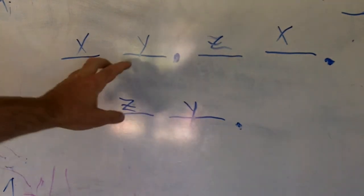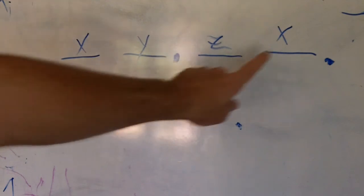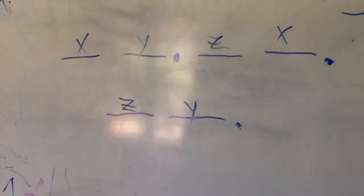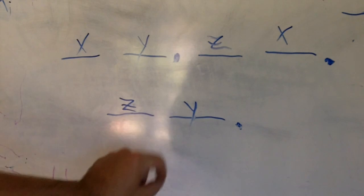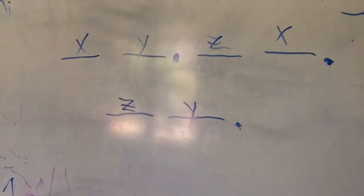We have to have two premises, one common term, two different terms. We have to have a conclusion. The two different terms have to be the terms that form the conclusion. That's the form of the syllogism.